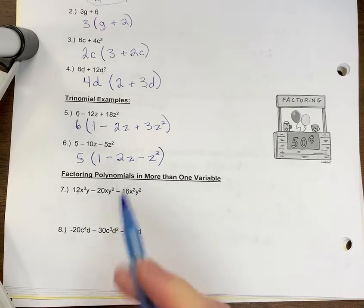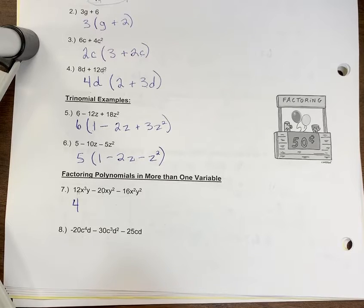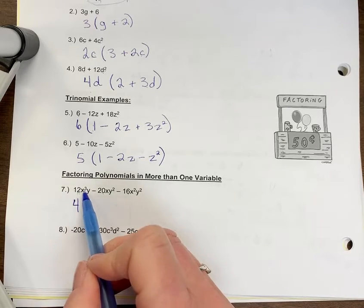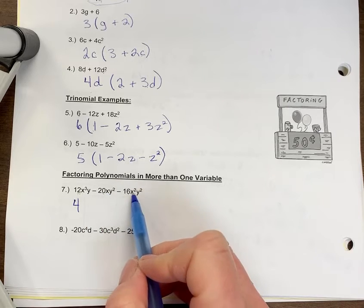Now we look at the variables. Let's look at x first. So x cubed means there's three x's in the first term, one x in the second, x squared is two x's. So the max I can factor out is one because there is only one here, so I'm going to factor out one x.